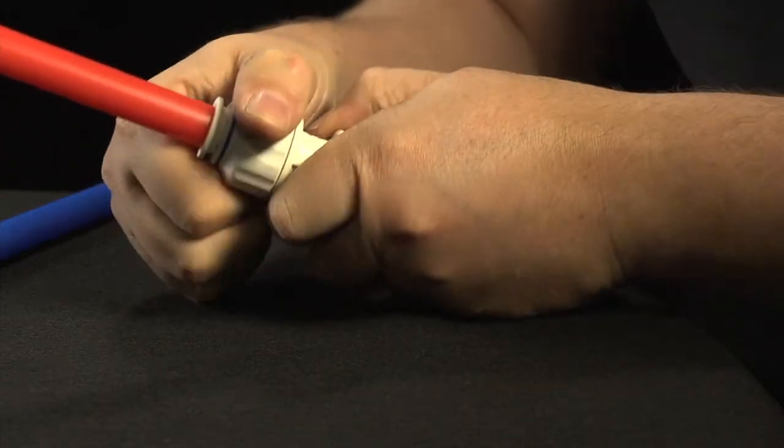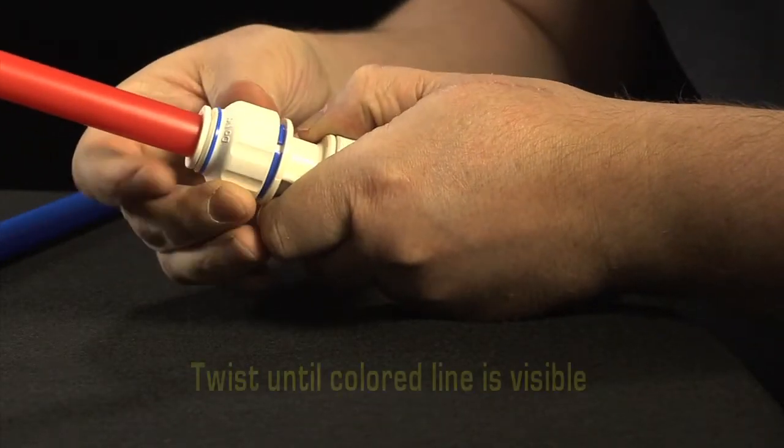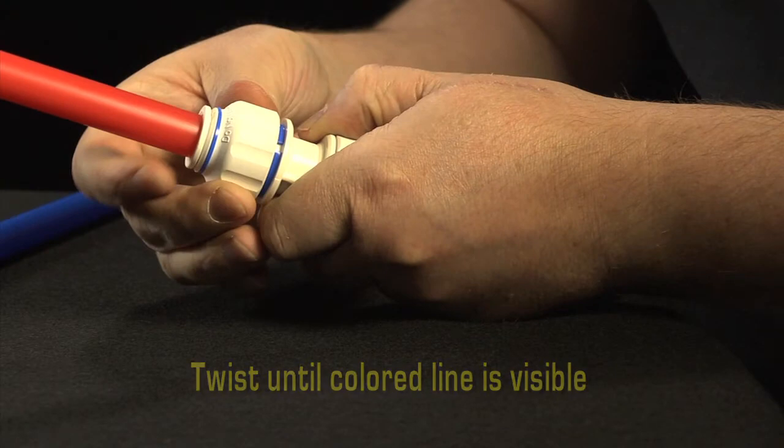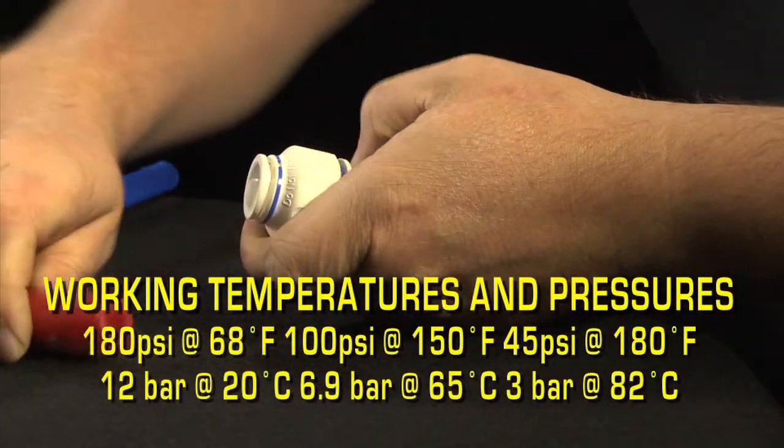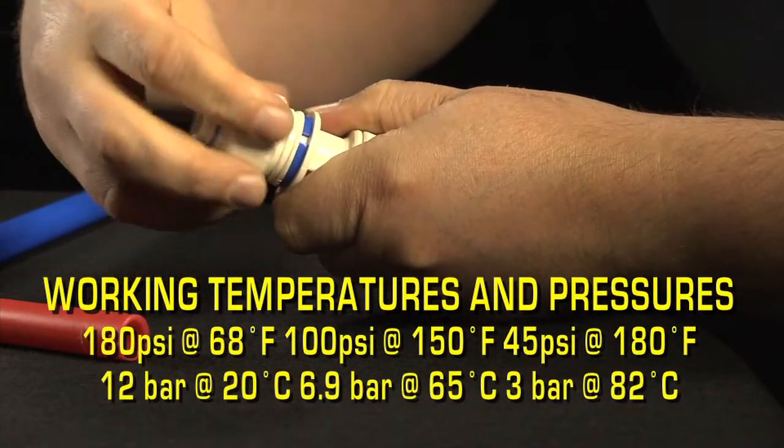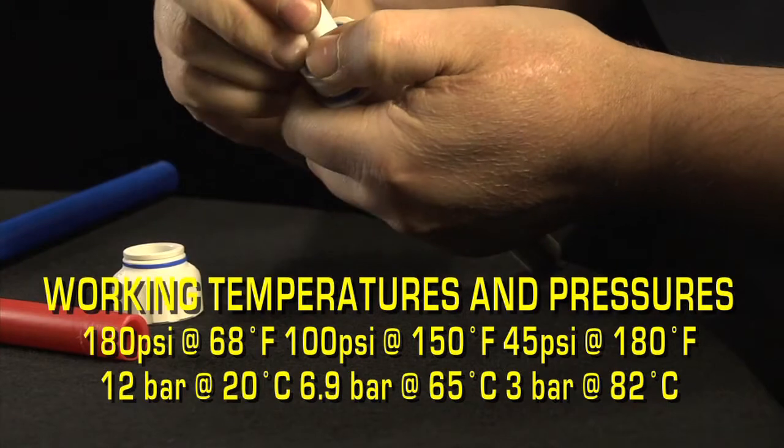To disconnect, unlock fitting by twisting until colored line is visible again. Press collet squarely against the face of the fitting. With the collet depressed, pull tubing to remove from fitting. The fitting may be reused.